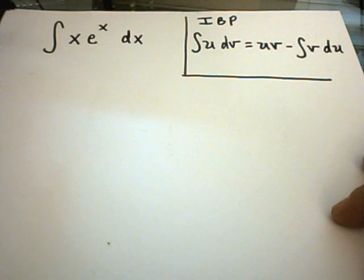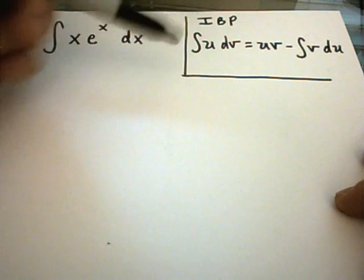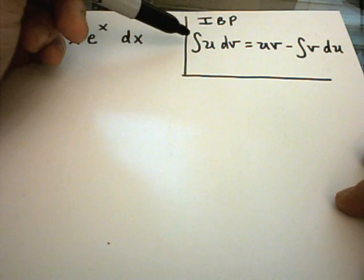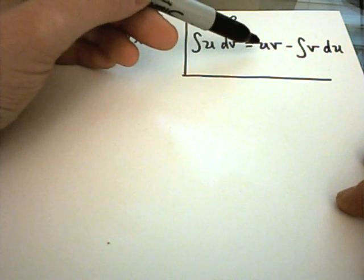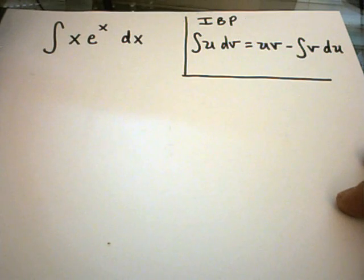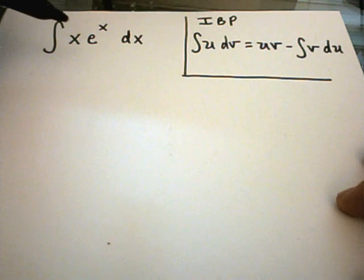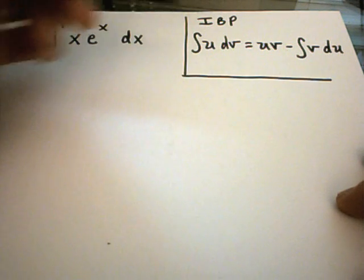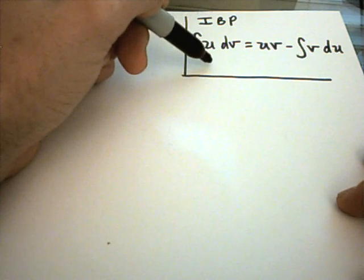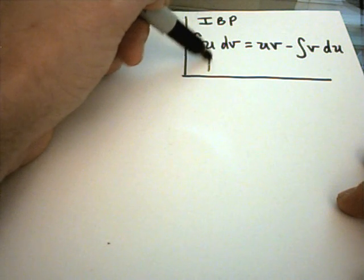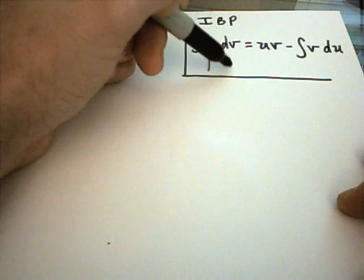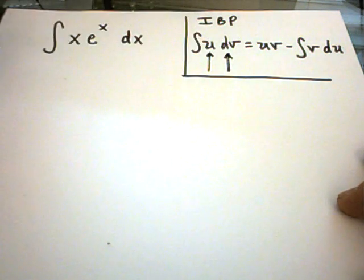In this video we're going to do an integration by parts problem. Recall that the integration by parts formula says if you integrate udv, that equals uv minus the integral of vdu. The idea is you're starting with the left side of this integral. We're going to label something to be u and we're going to label something to be dv.